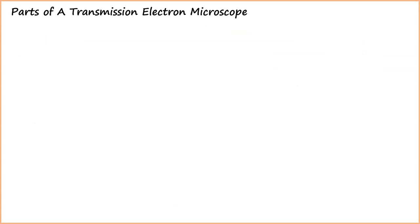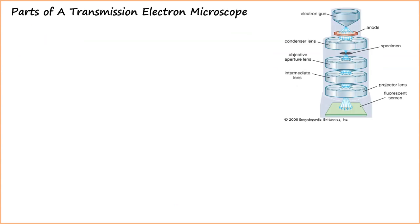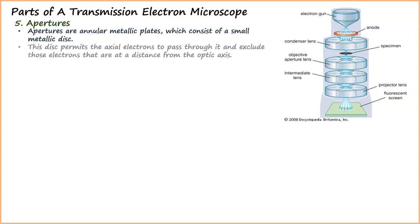The fifth part is apertures. Apertures are annular metallic plates which consist of a small metallic disc. This disc permits the axial electrons to pass through it and excludes those electrons that are at a distance from the optic axis.